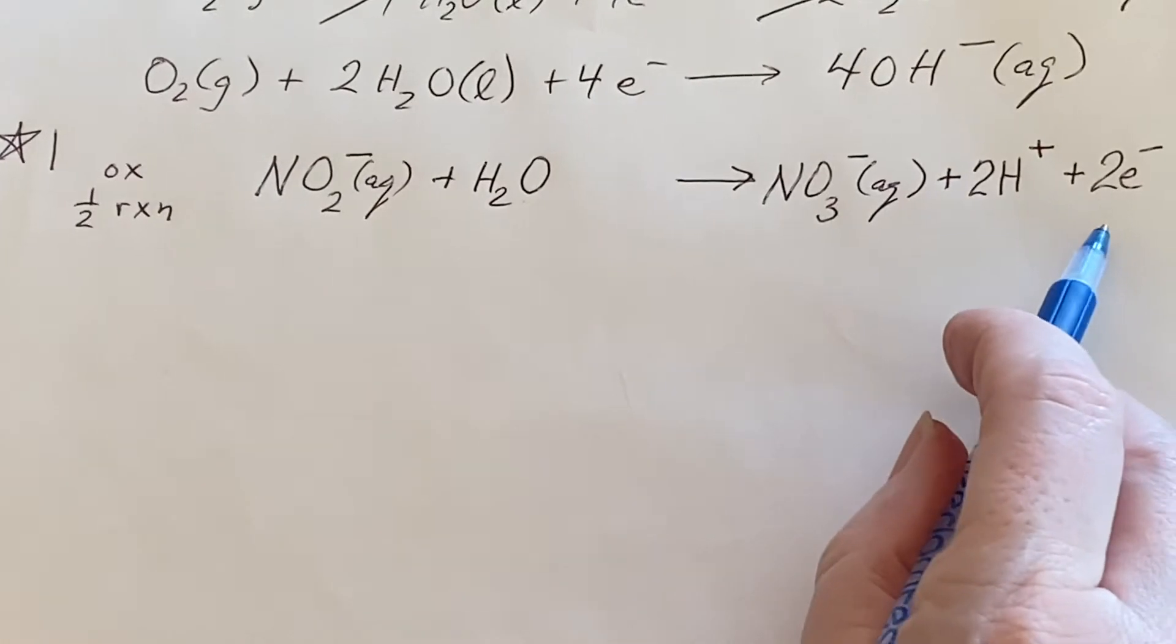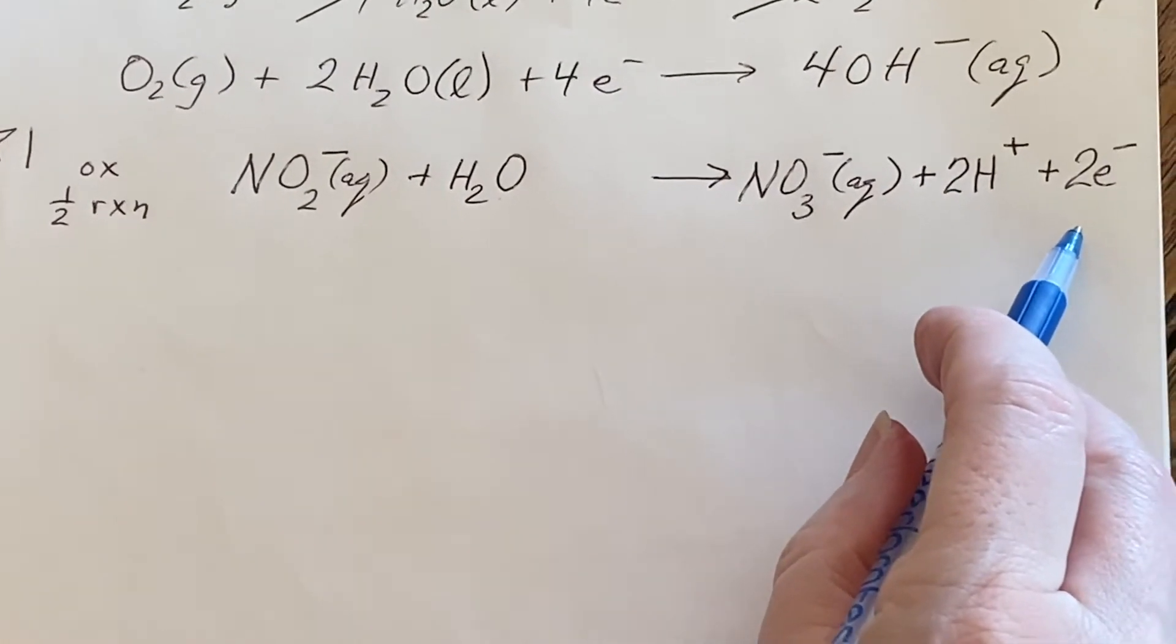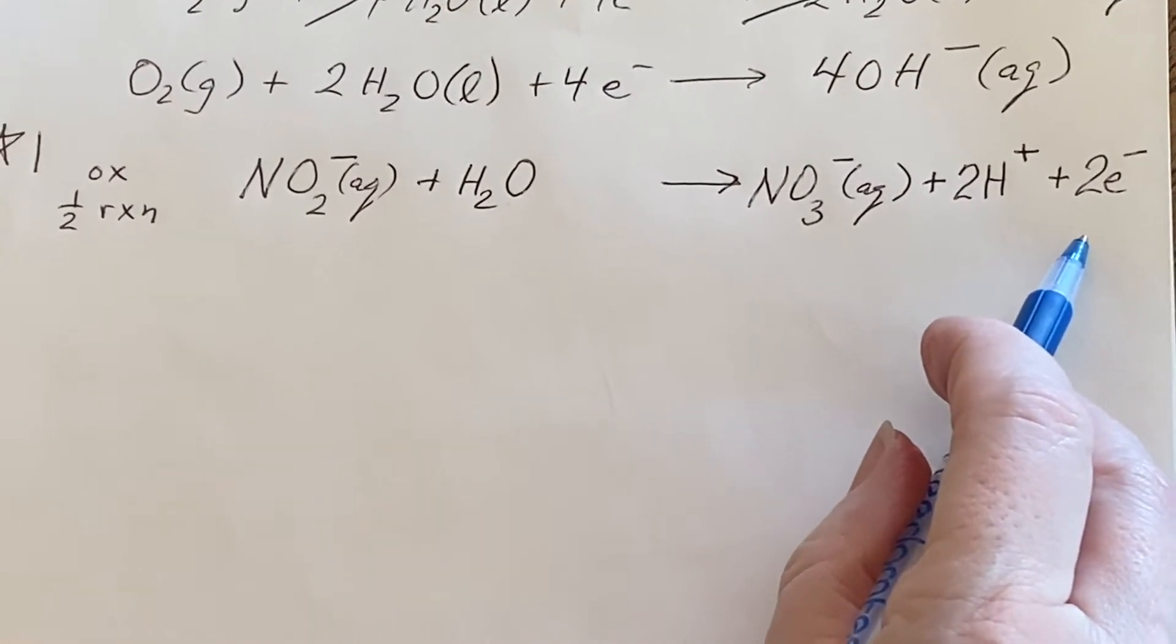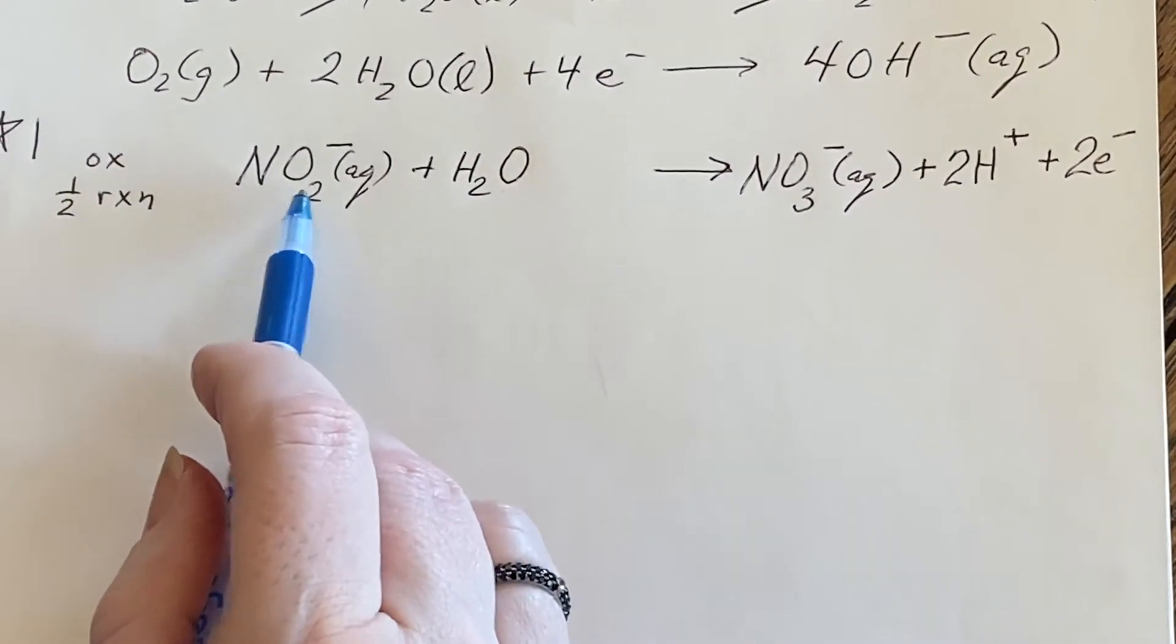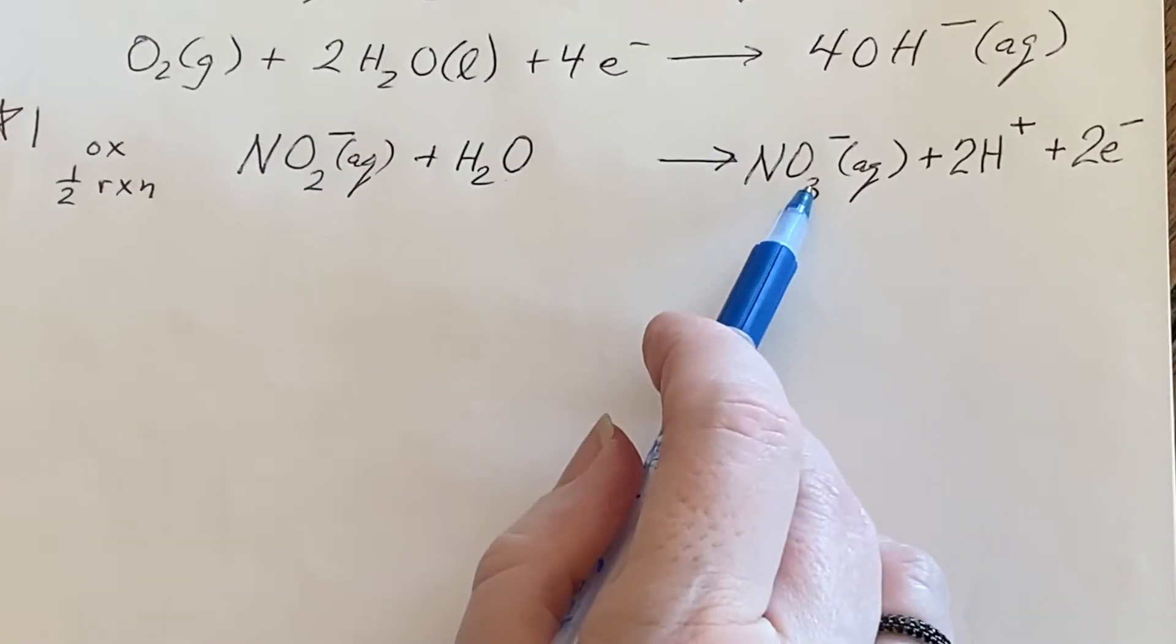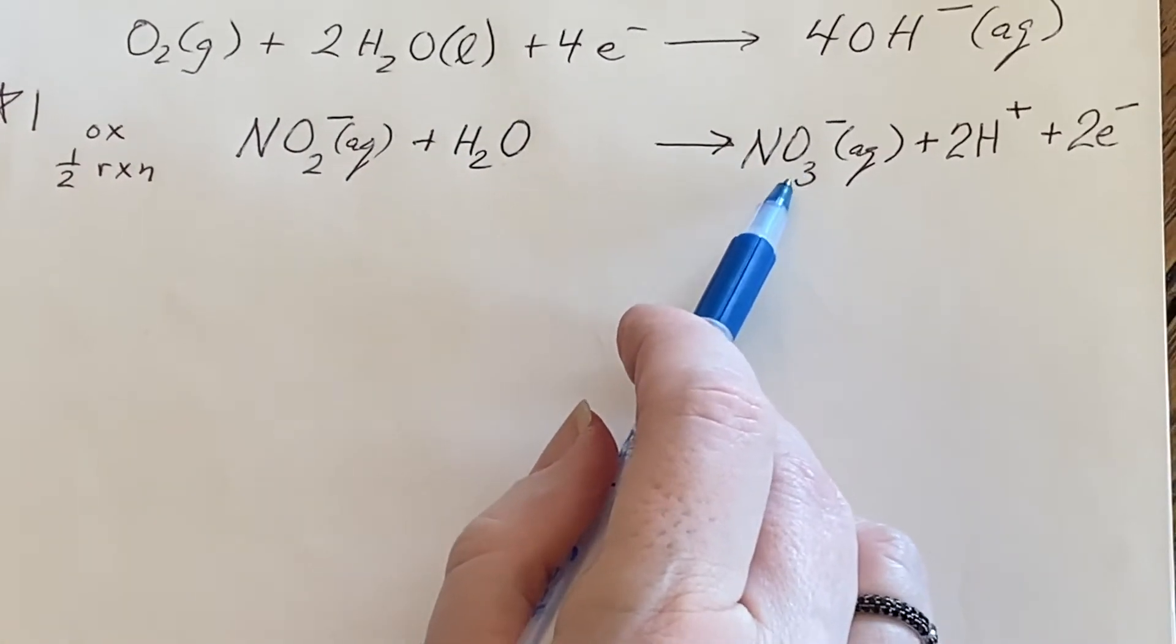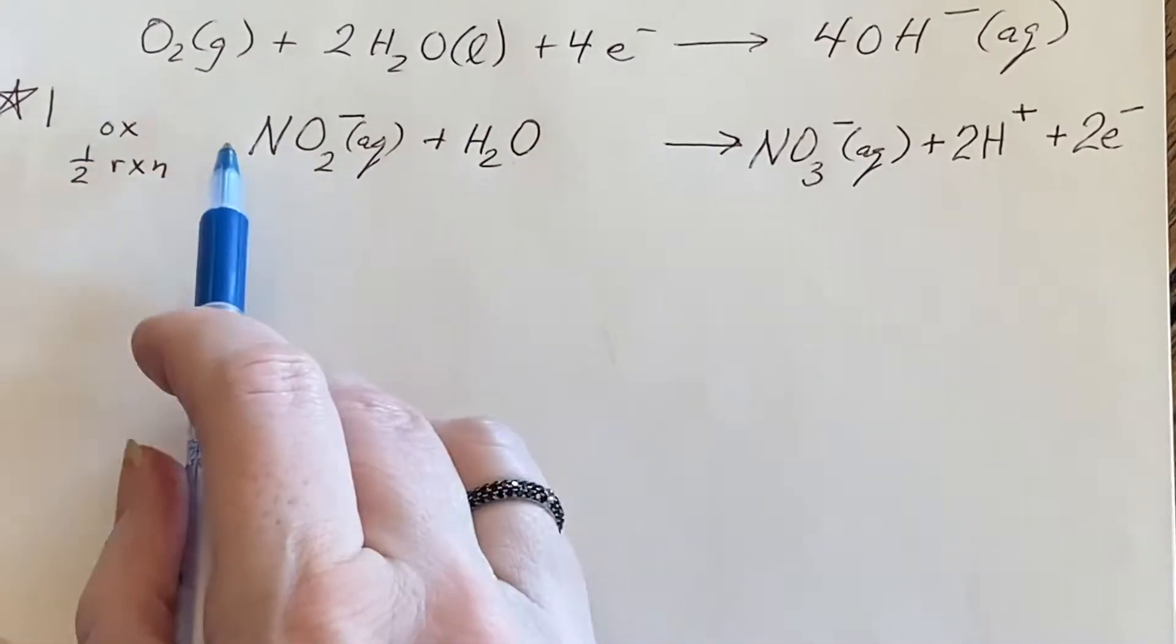This is our oxidation half reaction. How do I know it was oxidation? Well, the informal way is to say, well, it had two oxygens and now it's got three. So it definitely got oxidized in the original sense of the word. But I can also look at the numbers.